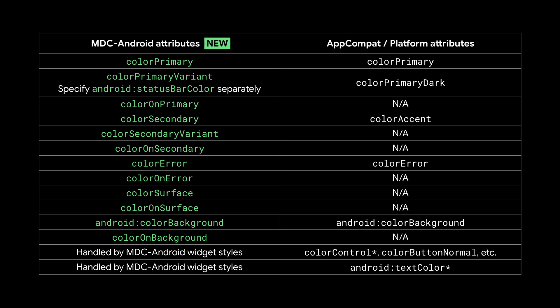Attributes from the Design Support Library such as colorAccent and colorControlNormal do not fit within this new color system and should be phased out. Some non-MDC Android widgets still use these attributes. The MDC Android themes take care of supporting this for you by internally mapping the new color attributes to these under the hood. Here's how the new color attributes map to the old AppCompat attributes and which ones you can keep, replace, or remove.